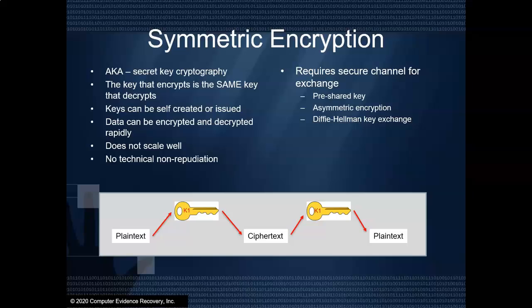Another thing that we don't have with symmetric encryption is non-repudiation. In other words, if I have the key and Bob has the key, because the key that encrypts is the key that decrypts, we don't know that Evil Eve hasn't picked up the key somewhere. So even though Bob gets the message and his symmetric key decrypts the message, we can't tell that that's the message that Alice sent.